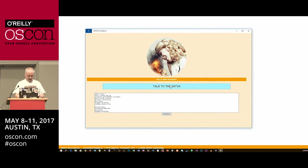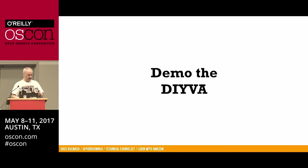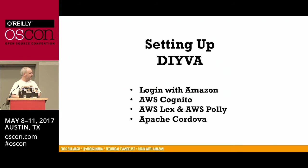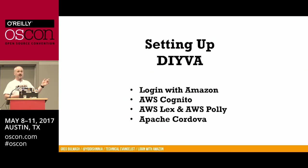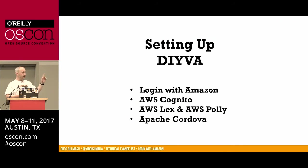So we'll tab out of this and go to the next step. We're setting up the Diva. We basically have four parts: we need to set up Login with Amazon, we need to set up Cognito, we need to set up AWS Lex — and Polly is built into that, though you can also use Polly separately — and then we need to set up the Cordova app.